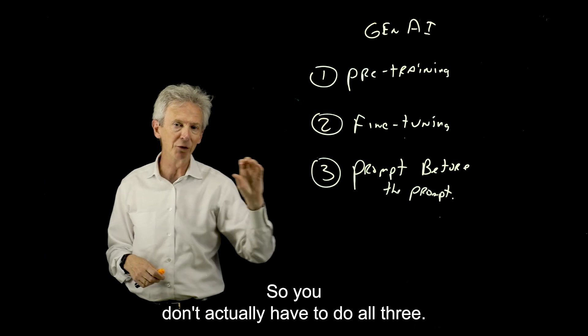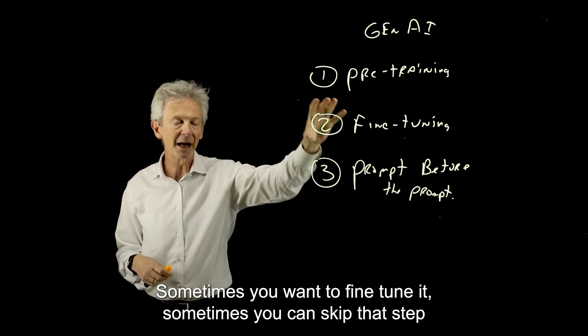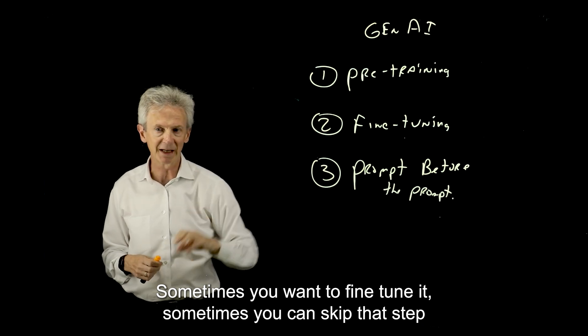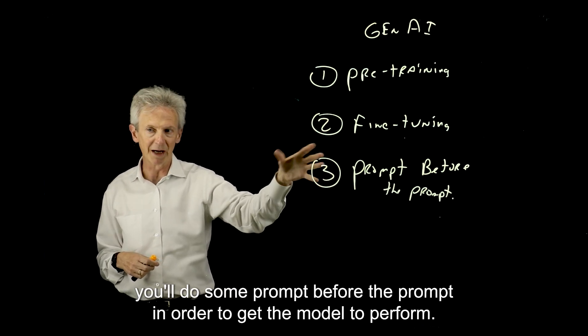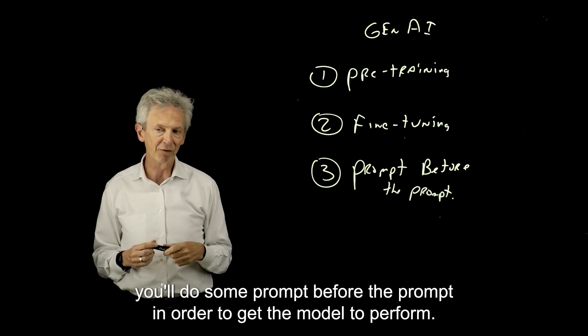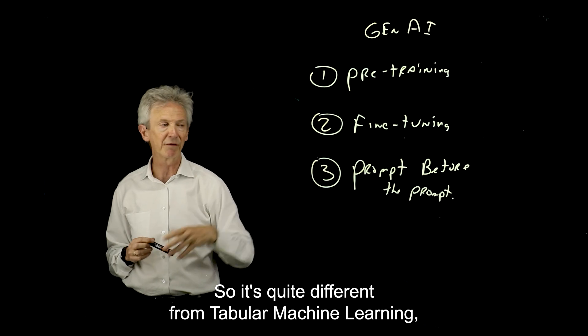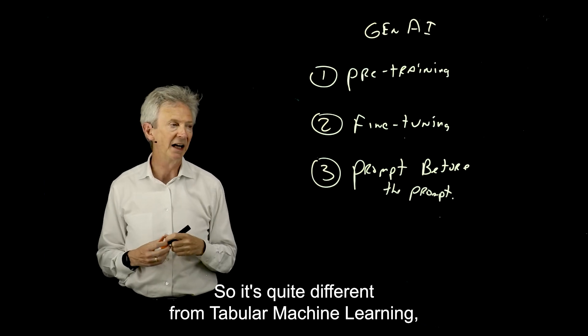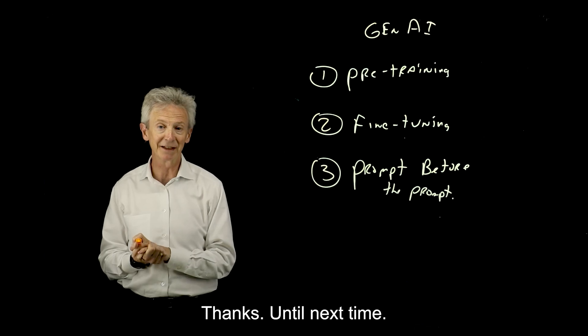So you don't actually have to do all three. You'll always get a model that's pre-trained generally. Sometimes you want to fine-tune it, sometimes you can skip that step. And generally speaking, you'll do some prompt before the prompt in order to get the model to perform. So those are really the three different kinds of training with Gen AI. It's quite different from tabular machine learning, but as we can see, it's quite effective. Thanks. Until next time.